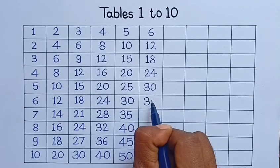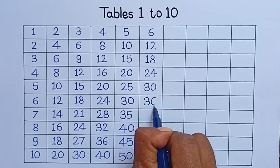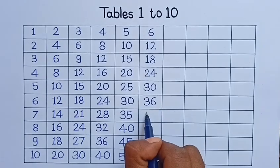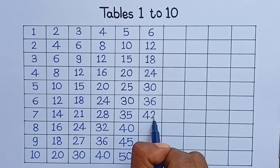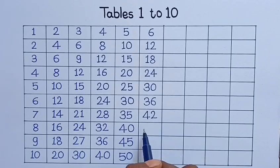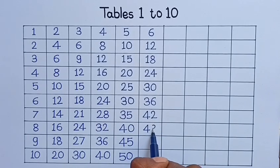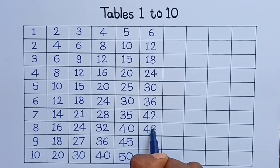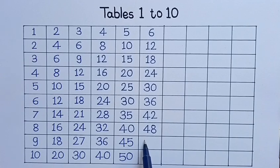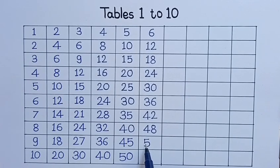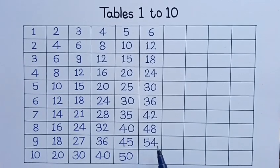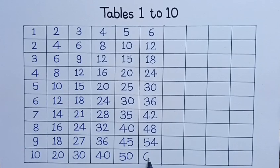6, 6 is 36. 6, 7 is 42. 6, 8 is 48. 6, 9 is 54. 6, 10 is 60.